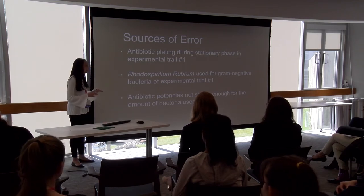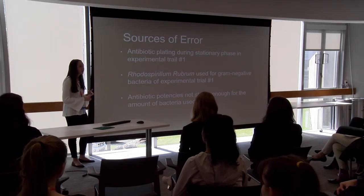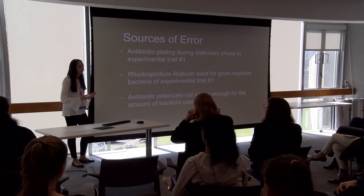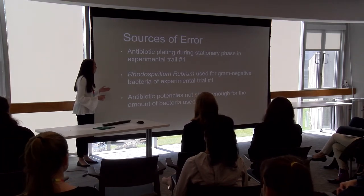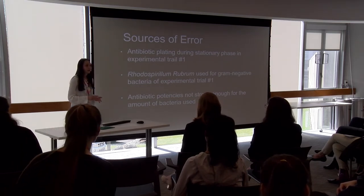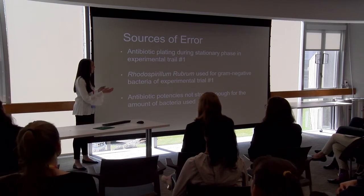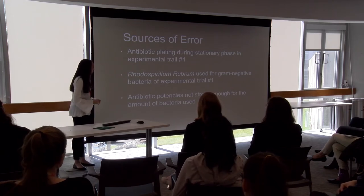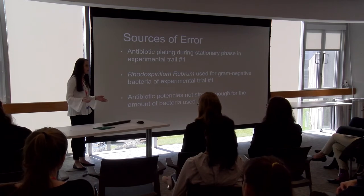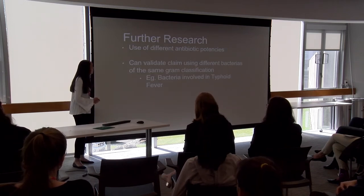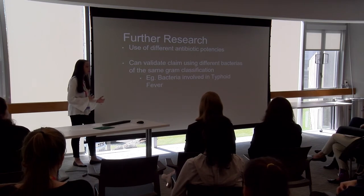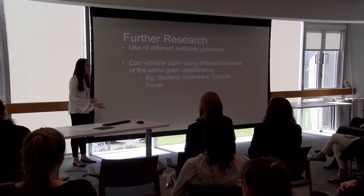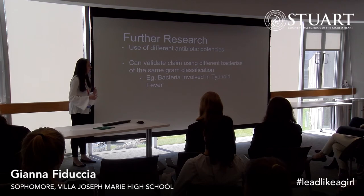For sources of error: before this experiment, I did a pretrial with two problems. First, I plated the antibiotic discs during the stationary phase, and it was inevitable I would get no results because the bacteria was already fully grown and the antibiotics couldn't do anything. Second, I used a bacteria called Rhodospirillum rubrum, which is gram-negative but very slow growing, and I didn't use the right growing conditions, so I switched to E. coli. The antibiotic potencies were also probably not strong enough for the amount of bacteria used. For further research, different antibiotic potencies could be tested to determine if bacteria were truly resistant or if the potency was just too low, and multiple gram-positive bacteria could be used instead of just Bacillus cereus to create a more validated relationship between gram classification and antibiotic susceptibility.